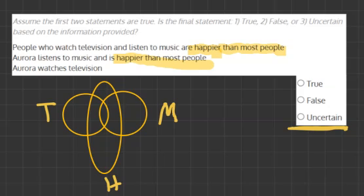The second statement says Aura listens to music and is happier than most people. So she fits into the right circle for music and she fits into the middle one for happier. But she does not fit into the T television circle on the left.